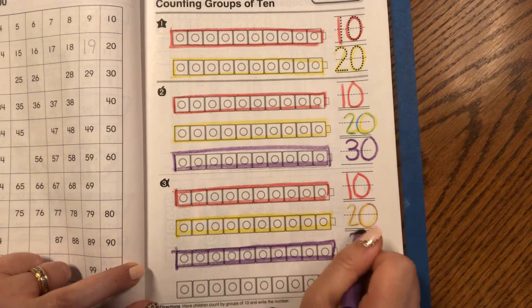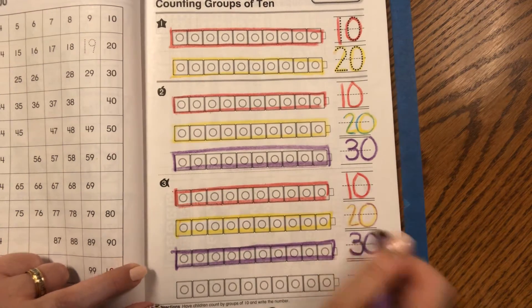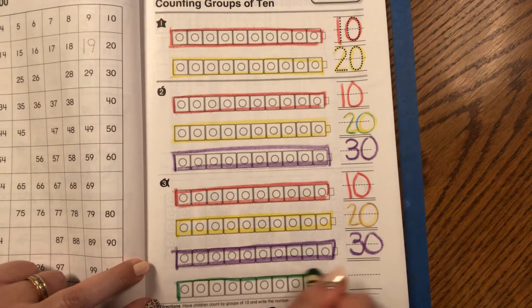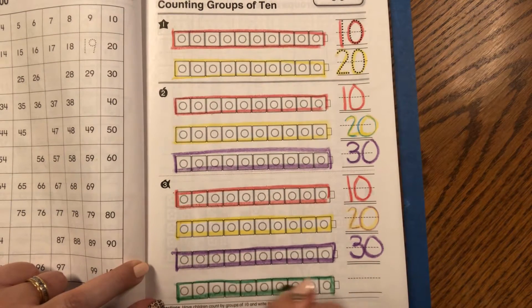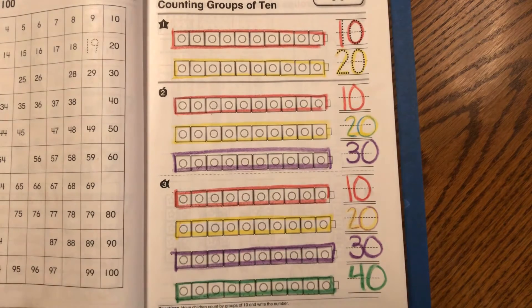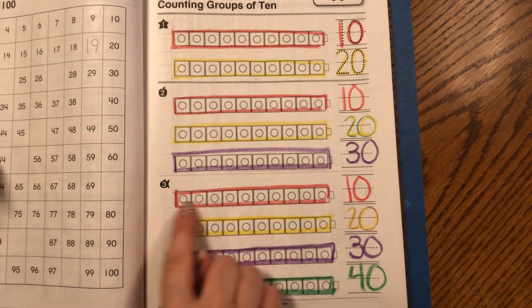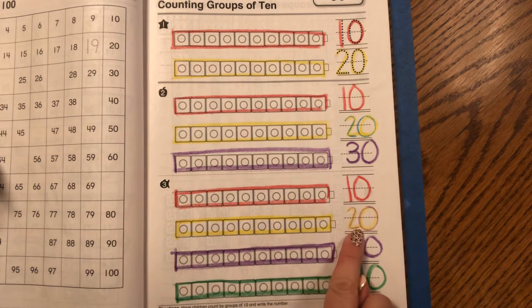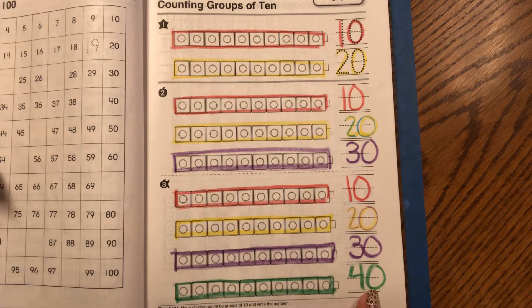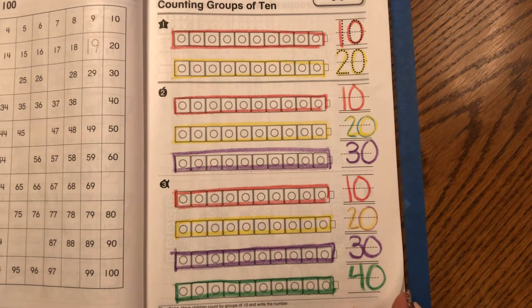And then here's four rows of 10. Four 10s and zero 1s. Let's count on from here. 10, 20, 30, 40. I love counting by 10s.